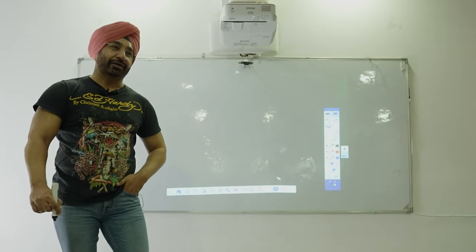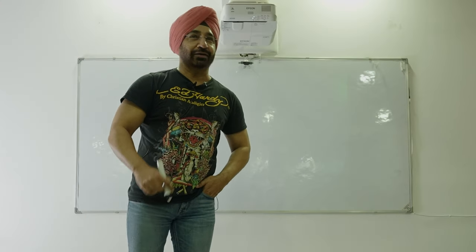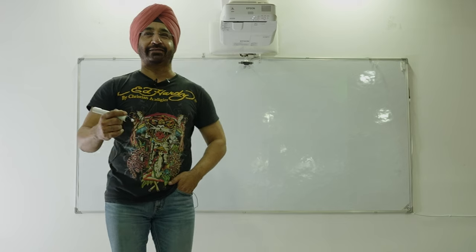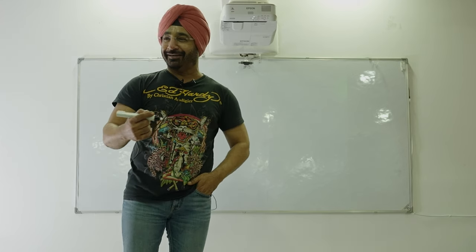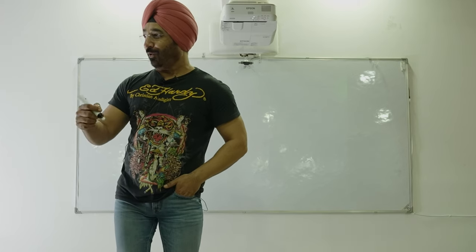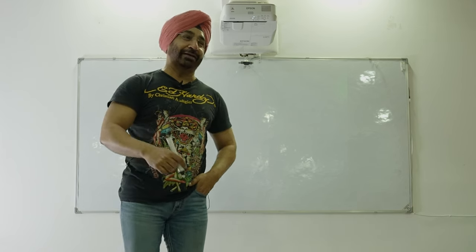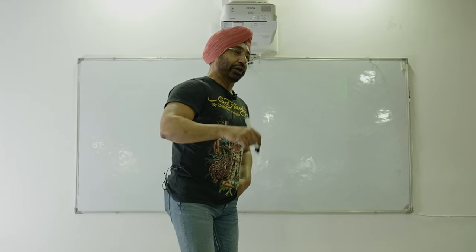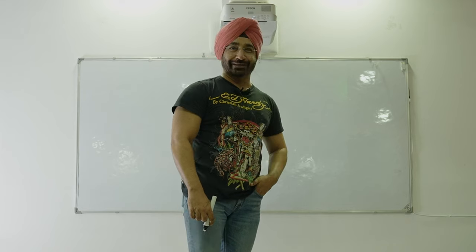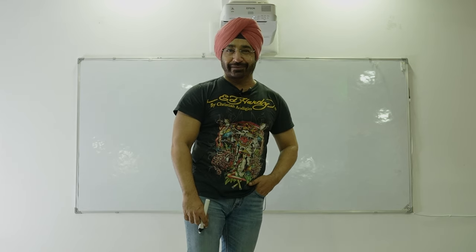In this class, we saw cylindrical projection — how a cylindrical projection is mathematically modified and made orthomorphic, and we gave it the name Mercator projection. In today's class, we will see conical projection.